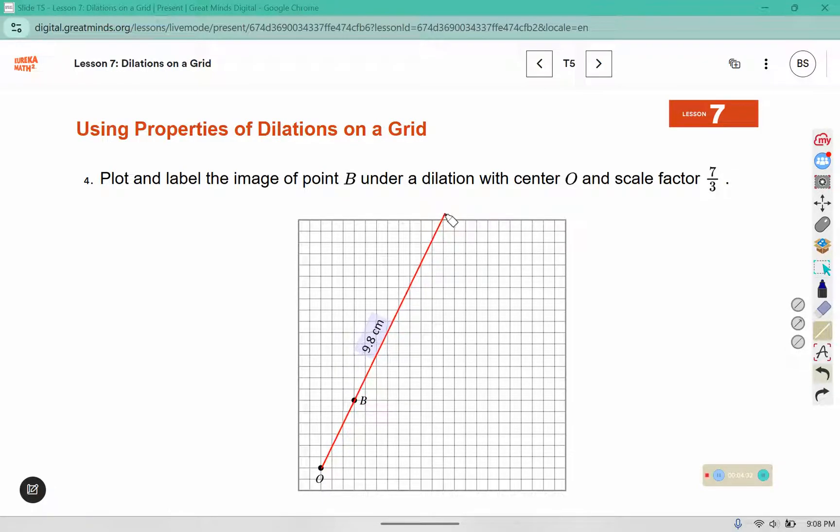From here, draw that line from O. So B is 1, 2, 3 lines away from O. 3 times 7 is 21. Remember, there's an invisible one down here, so 1 times 3 is 3. 3 goes into 21, 7 times. So we have 1, 2, 3, 4, 5, 6, 7. And this should be B prime.